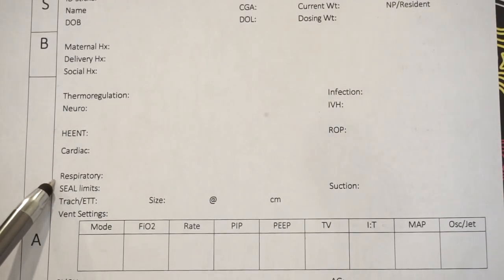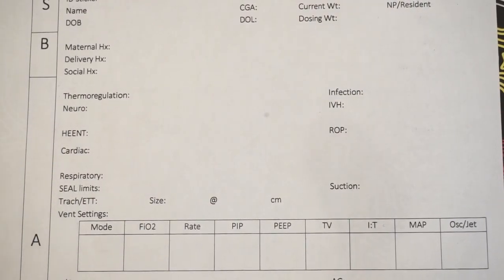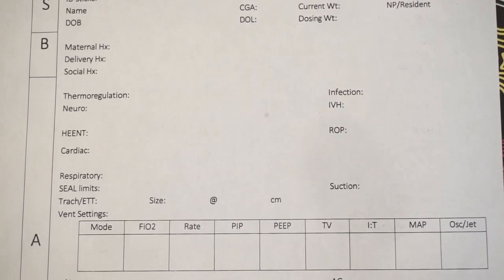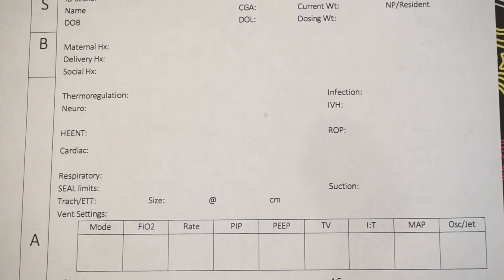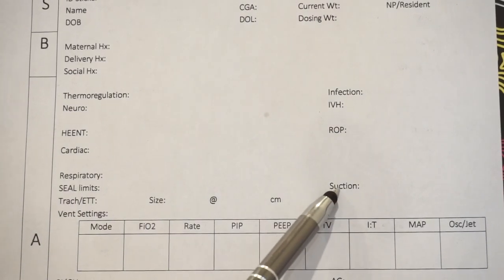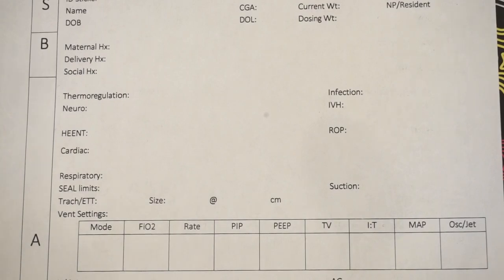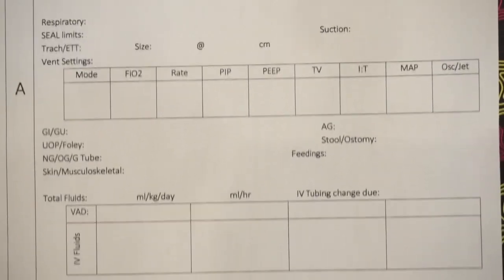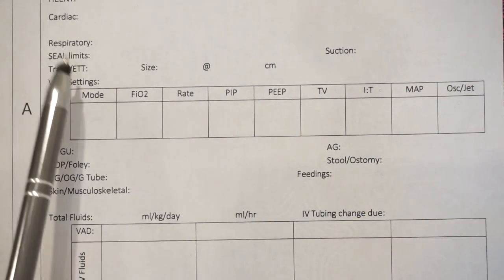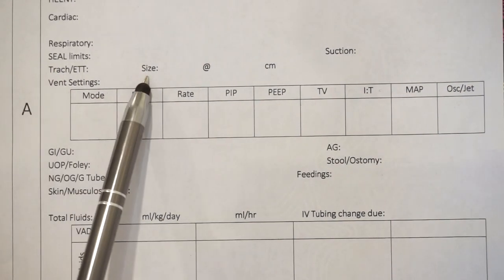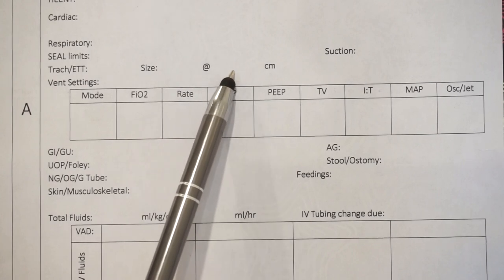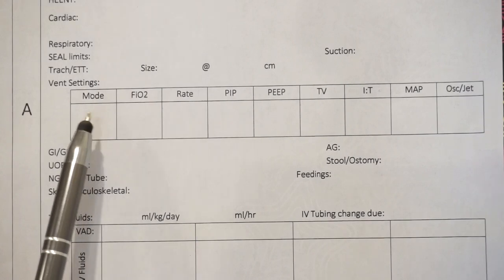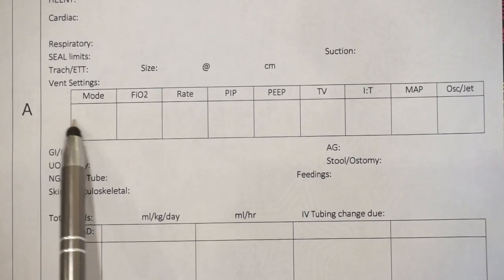And then of course over here we have respiratory. So how are they breathing, are they retracting, are they tachypneic, do they have any respiratory support and oxygen requirements? Then over here for suction, we talk about if they were deep suctioned, do they have a lot of oral or nasal secretions. If they have a trach or they're intubated, this is where you would write the information, the size, and what it is taped at. Here it would be vent settings, so if they're in bubble CPAP or if they're on a ventilator, you would write all of that information here.